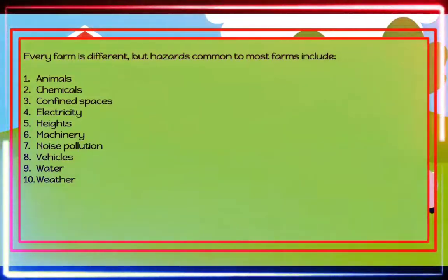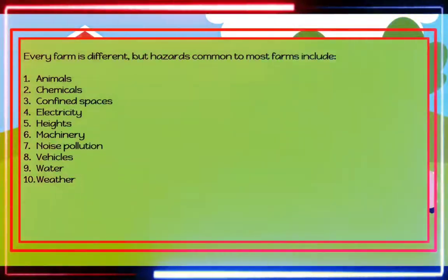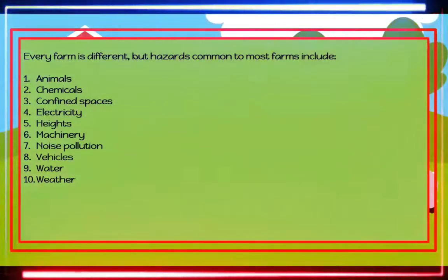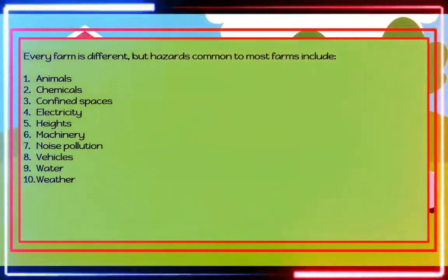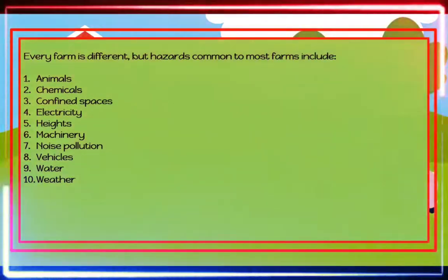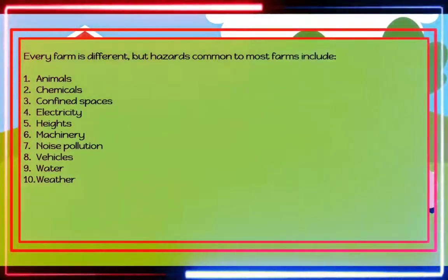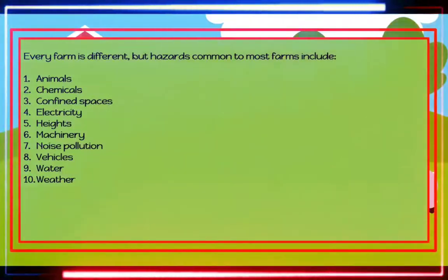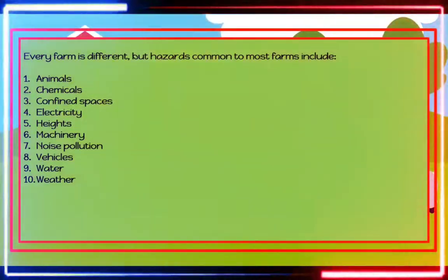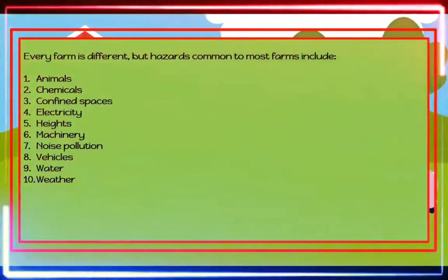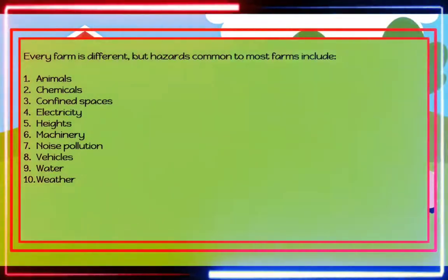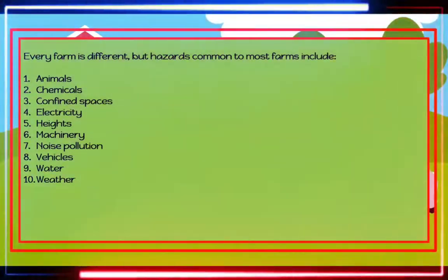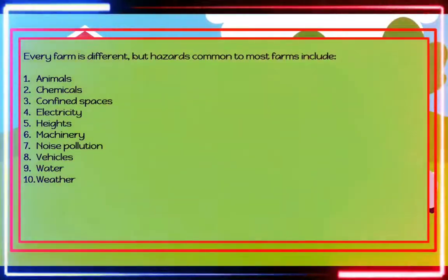Number eight, vehicles. Crashes or falls from motorbikes, two-wheel and quad bikes, and tractors. Number nine, water. Drowning can occur in as little as five centimeters of water. Dams, lakes, ponds, rivers, channels, tanks, drums, and creeks are all hazards; young children are particularly at risk. Number ten, weather hazards include sunburn, heat stroke, dehydration, and hypothermia.